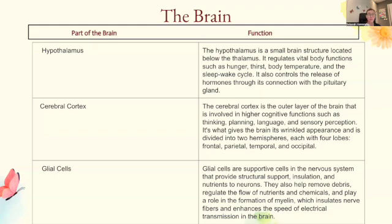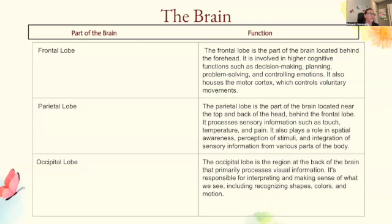Glial cells are supportive cells in the nervous system that provide structural support, insulation, and nutrients to neurons. They also help remove debris, regulate the flow of nutrients and chemicals, and play a role in the formation of myelin, which insulates nerve fibers and enhances the speed of electrical transmissions — as we discussed in 1.3. The frontal lobe is located behind the forehead and is involved in higher cognitive functions such as decision-making, planning, problem-solving, and controlling emotions. It also houses the motor cortex, which controls voluntary movements.